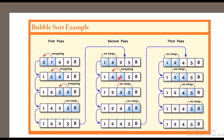Next we compare 4 and 2. Is 4 greater than 2? True. So we swap 2 and 4 — 2 was in the third position and moves to the second position, and 4 moves to the third position. Now compare 4 and 5: 4 is not greater than 5, so no swap is needed. The same applies for 5 and 8 — no swap needed. After the second pass, the output array is 1, 2, 4, 5, 8.